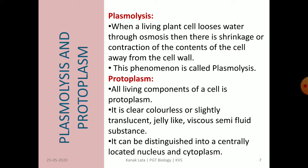Next is about plasmolysis and protoplasm. Plasmolysis is the result of exosmosis. When a living plant cell loses water through exosmosis, there is shrinkage of cell contents away from the cell wall. This phenomenon of shrinkage is called plasmolysis. Protoplasm is the living component of the cell. It is colorless or slightly translucent and a jelly-like viscous semi-fluid substance. It can be distinguished into a centrally located nucleus and cytoplasm.